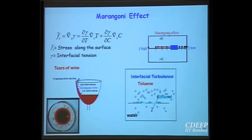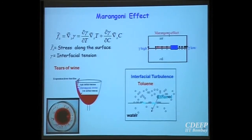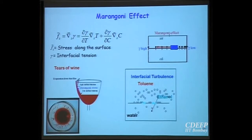Another phenomenon is interfacial turbulence. When a soluble material transfers from an organic phase into an aqueous phase, mass transfer is not uniform at all interface points. The resulting interfacial concentration difference creates an interfacial tension gradient, which causes motion — sometimes so violent that it creates significant mixing. Mass transfer rates can increase a hundredfold due to interfacial turbulence.